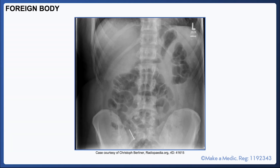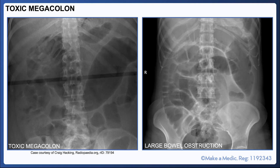If a patient has presented after swallowing a dangerous foreign body or having inserted one into their rectum, an abdominal x-ray may be requested. In this case, you can see a nail within the abdomen. It's important to note that you must consider the composition of the foreign body — for example, most metals and glass will show up on an x-ray, however wood and plastic would not.